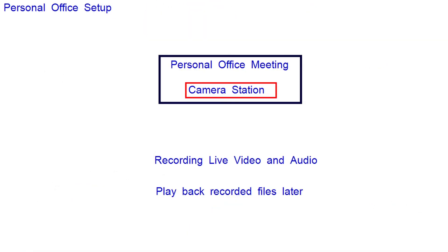A meeting can also take place in a personal office, where the camera station is useful for recording a meeting for future reference or to review certain details. In this case, one webcam may focus on attendees and one webcam may focus on the writing on the whiteboard. It is not necessary to set up a play out station here — the recorded video can be played back at a later time after the meeting.